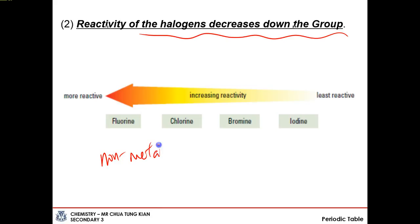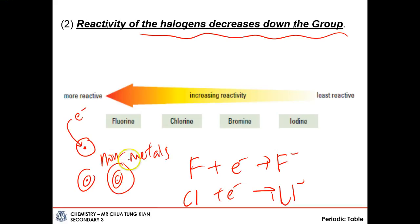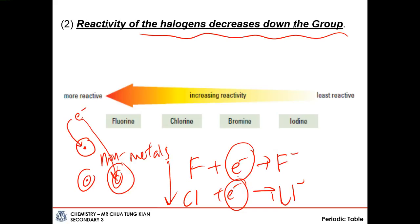Halogens gain electrons because the nucleus attracts electrons from outside. As you go down the group, there are more and more shells, so the nucleus is further and further away from the outer edge of the atom. The attractive force between an incoming electron and the nucleus decreases, making it harder and harder to gain the additional valence electron. So reactivity decreases down the group for halogens — it becomes harder to react, and chemical reactions proceed more slowly.